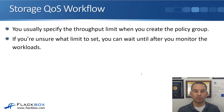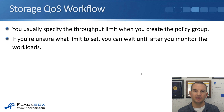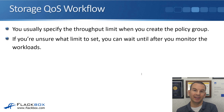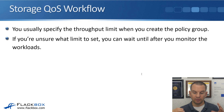Regarding the Storage QoS workflow: you usually specify the throughput limit when you create the policy group. But if you've got a workload and don't know what values to set — and the vendor doesn't provide guidance — you can create a policy group without setting any values, in which case it will operate in monitor-only mode. You can then view the actual throughput the workload is using, and base your ceiling or floor values on that observed data.